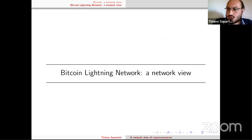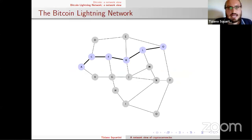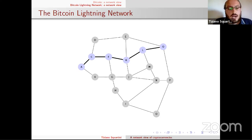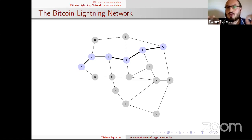Moving to the Bitcoin Lightning Network: the idea is to solve the scalability issue of Bitcoin. The rate at which transactions are processed is not satisfactory, so the idea is to not burden the blockchain so much by creating a second layer where users can do faster payments. To do these faster payments, they have to choose a path — to find the path in the network that joins them. This is the basic idea of the Bitcoin Lightning Network.